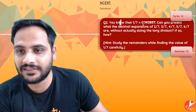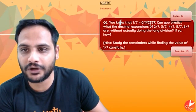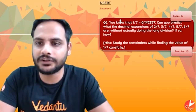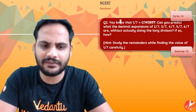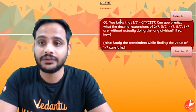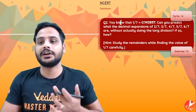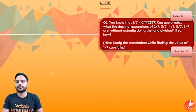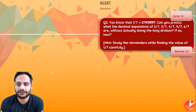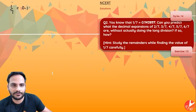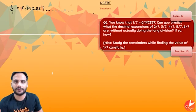You know that 1/7 has a bar over here — it is 0.142857 bar. Can you predict what the decimal expansion of 2/7, 3/7, 4/7, 5/7, 6/7 are without actually doing the long division? We already know that 1/7 is 0.142857 repeating.